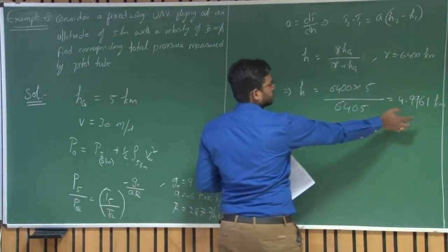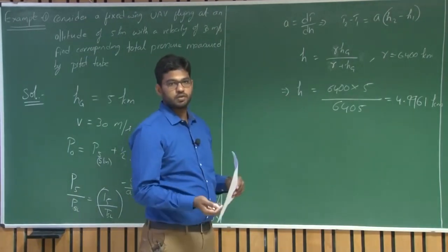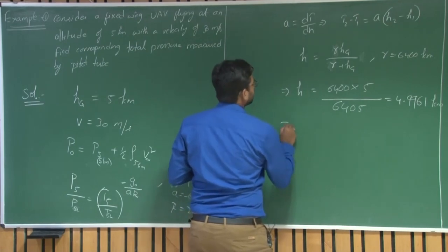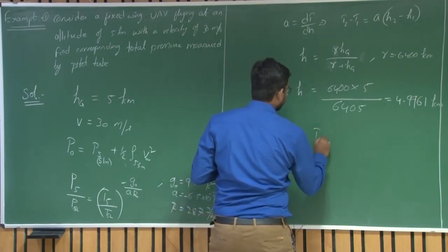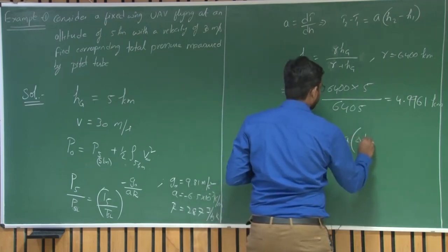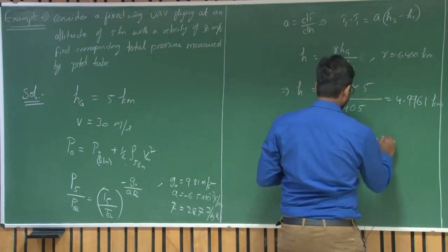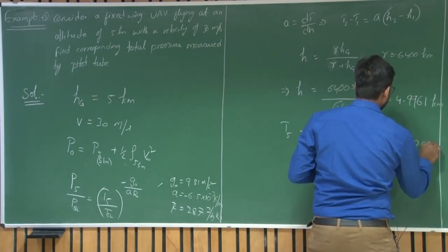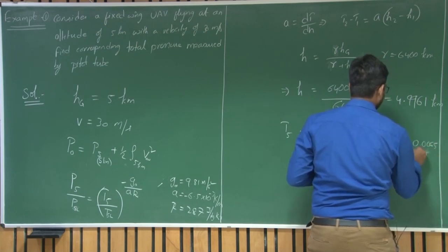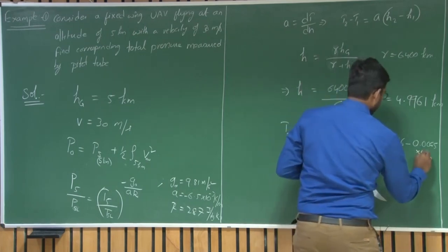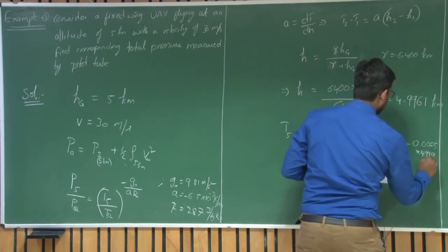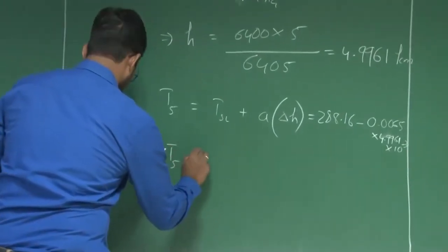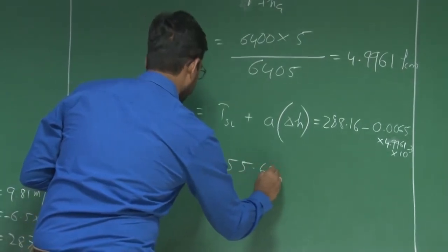The difference between geopotential and geometric altitude is very, very small. At lower altitudes, geopotential and geometric altitudes are almost the same. Now, the temperature at 5 kilometers equals T at sea level plus A times delta H, which is 288.16 Kelvin minus 0.0065 times 4.9961 × 10³ meters. This gives T at 5 kilometers equals 255.685 Kelvin.